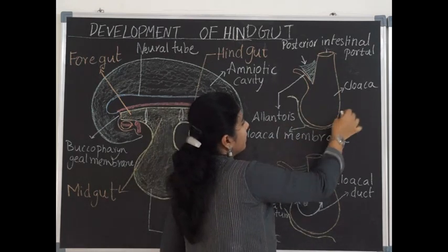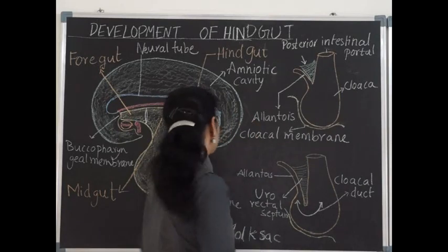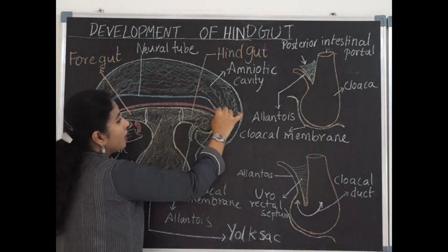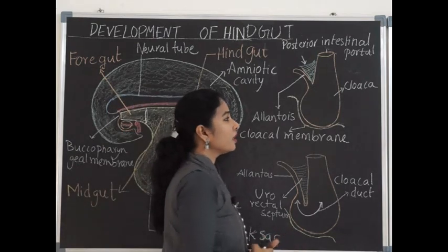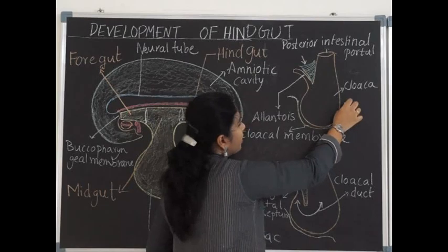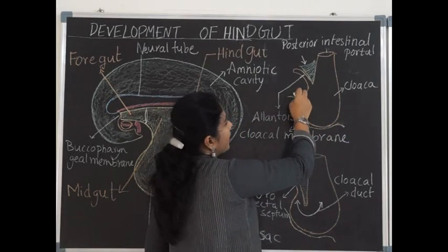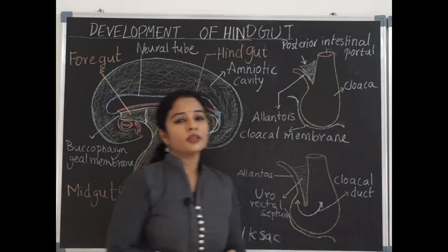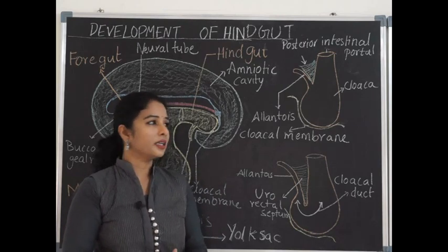Posterior to the dorsal part of the cloaca there is the primitive streak, and here is the notochord. The primitive streak starts growing and the mesodermal cells of the primitive streak migrate from the dorsal to the ventral side along the genital folds. They settle in the infraumbilical region of the anterior abdominal wall, forming most of the anterior abdominal wall below the umbilicus.